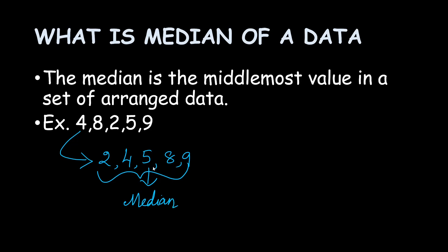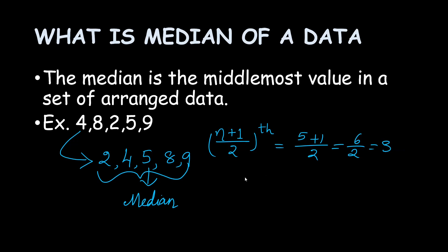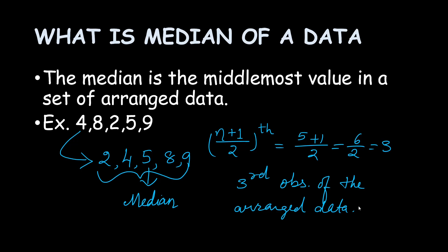But how do we confirm that 5 is the middle value? Here, number of observations is taken as n. For an odd number of data, the formula is (n+1)/2 — that position in the arranged data is the median. Here n=5, so (5+1)/2 = 6/2 = 3. So the 3rd observation of the arranged data is the median.